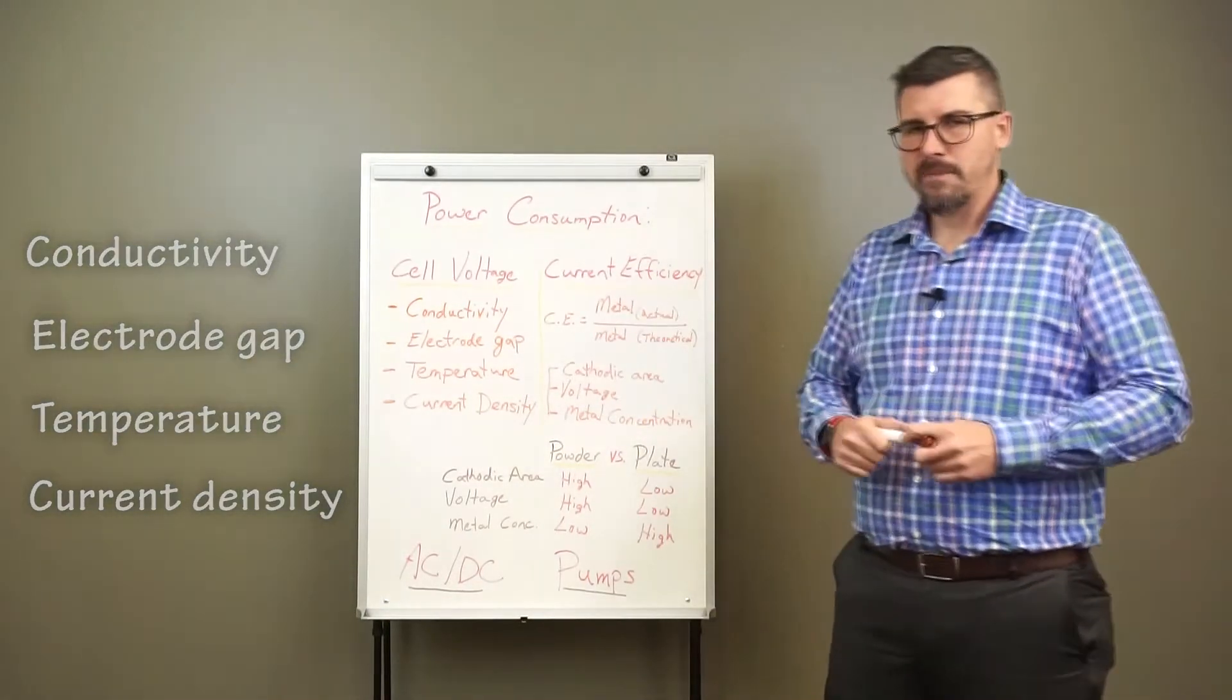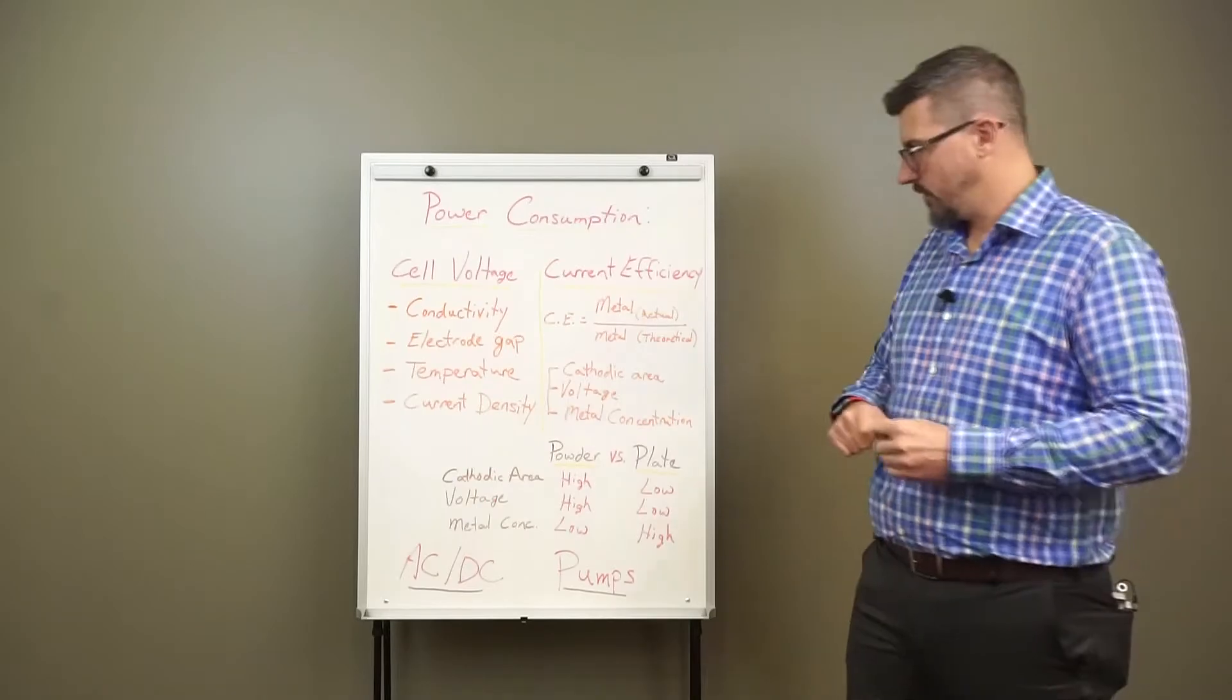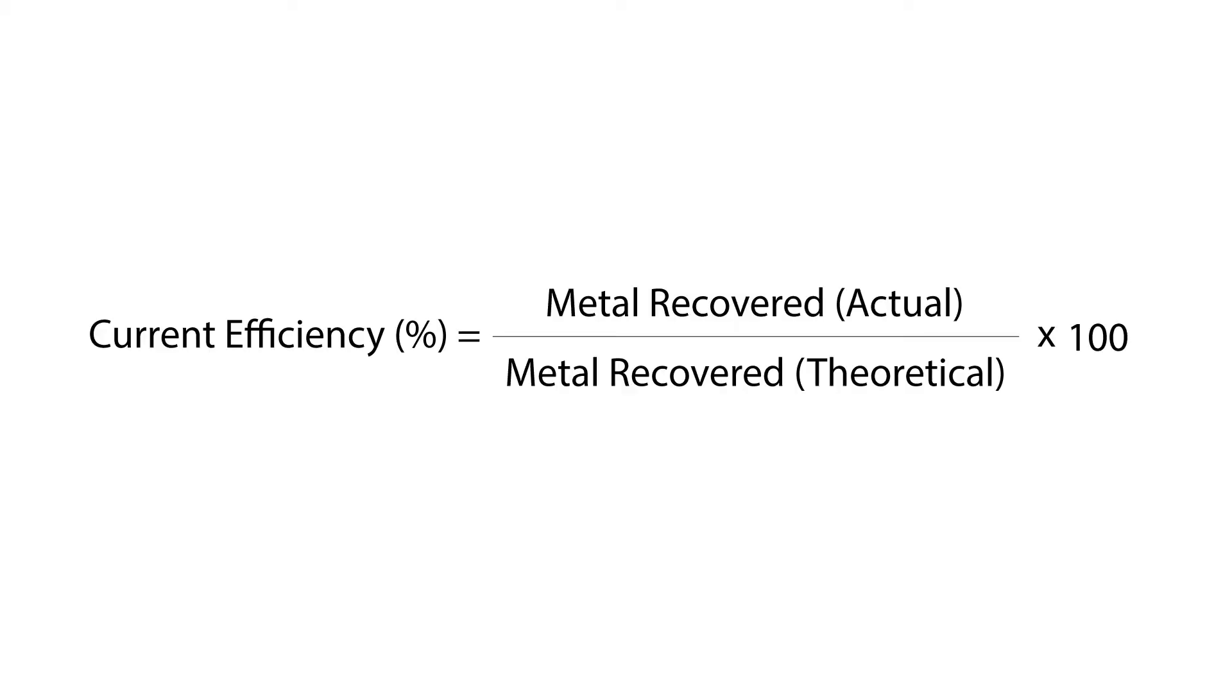So those are the factors that impact cell voltage. Let's take a look at the current efficiency, which is the second factor. The current efficiency is really defined as the actual metal recovered in the course of electrowinning compared to the theoretical metal as predicted by Faraday's law.